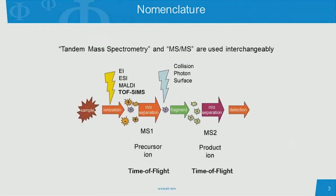I want to start with some nomenclature. I will probably interchangeably use tandem mass spectrometry and MS-MS — these two terms mean the same thing. If you read the literature, some authors use one, some use the other. If you search for either one, you'll find a description on Wikipedia, and here's a generic cartoon of what we mean by both of these terms.